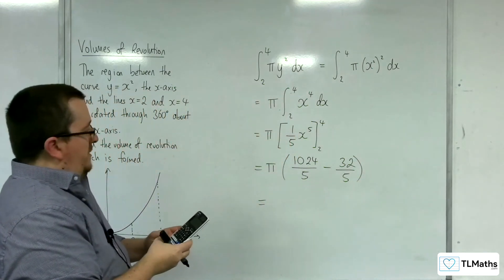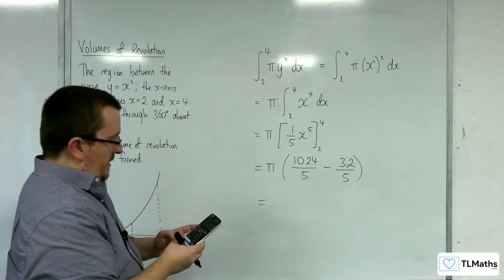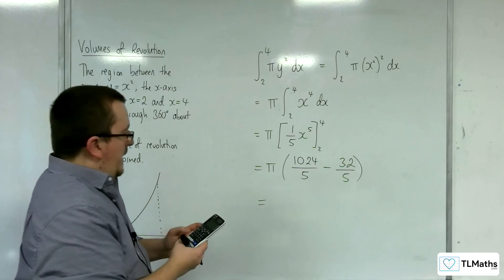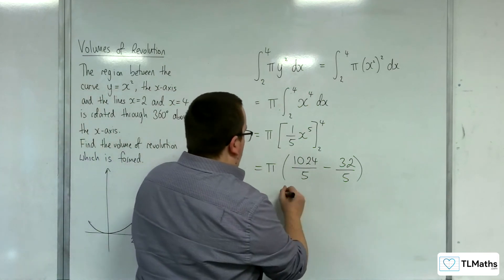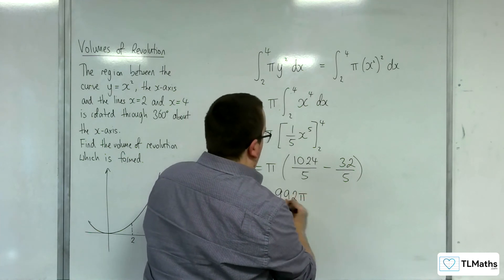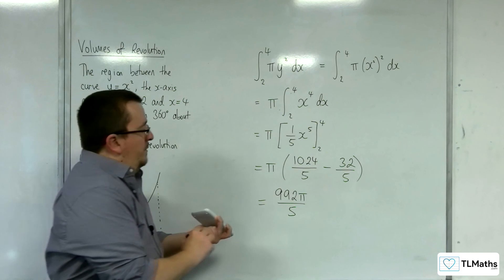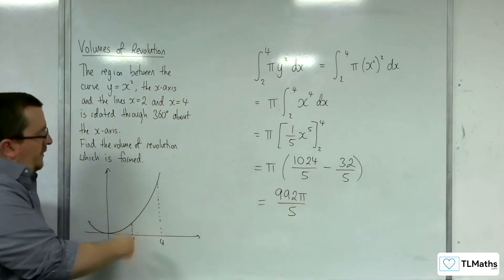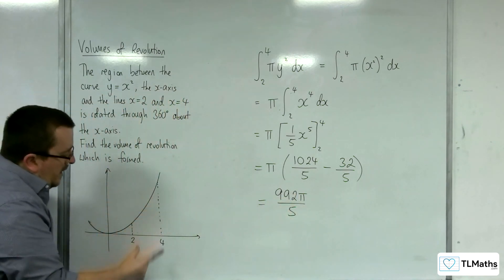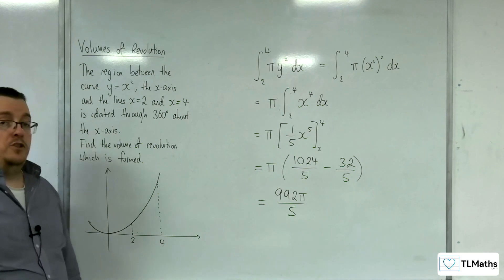So 1,024 over 5, take away 32 over 5, is 992 over 5. So 992 pi over 5. And that is the exact volume of the shape produced by rotating y equals x squared around the x-axis between 2 and 4.